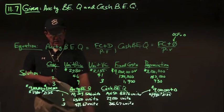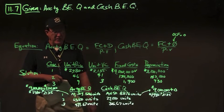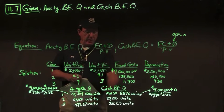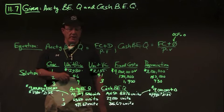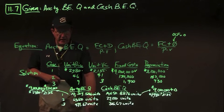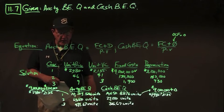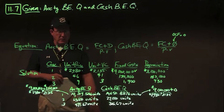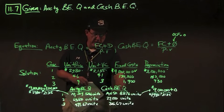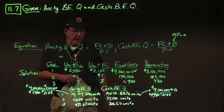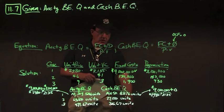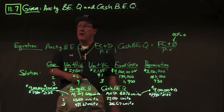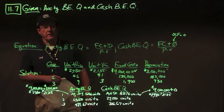For case two: accounting break-even is 63,600 units and cash break-even is 27,000 units. For case three: accounting break-even quantity is approximately 472 units (471.67) and cash break-even is approximately 317 units (316.67). There are your answers to problem 11.7.